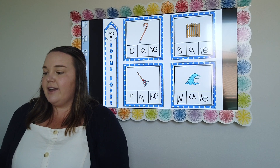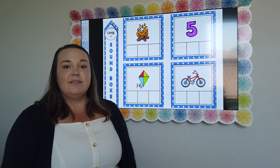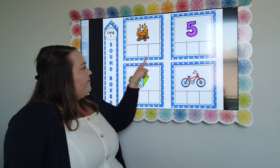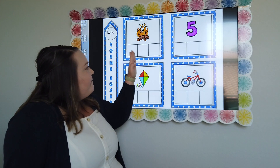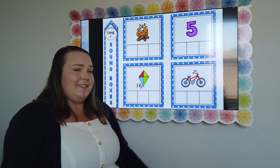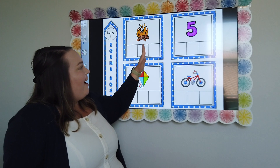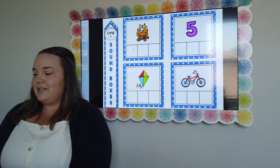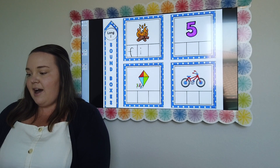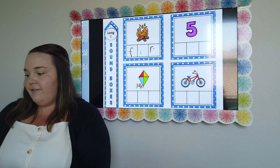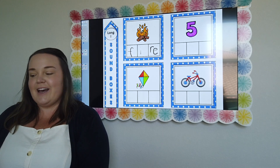Let's go ahead and move on to our next one for the long I — we'll still be having those magic E here. Can you name the picture? Fire. Do you hear that target sound of the long I? Listen for the I in fire. How many sounds do you hear? And what letters make each sound? We have F, I, R. Let's go ahead and write those in the boxes — I, our target sound. We have that magic E that's making the I say its name.